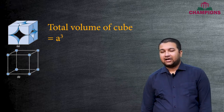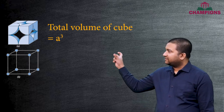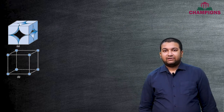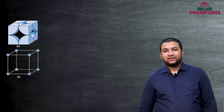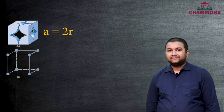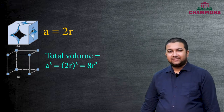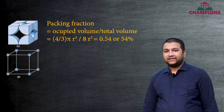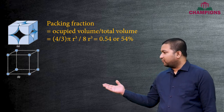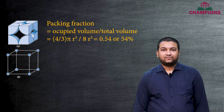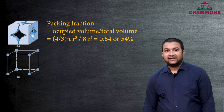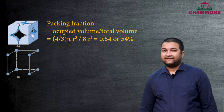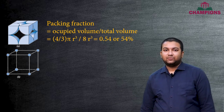The relation between a and r: two radii combine to form one side of the cube, so a = 2r. Therefore a³ = (2r)³. Taking the ratio of occupied volume to total volume gives approximately 54%. This means 54% of the cube is occupied and about 46% is empty space — that is the packing fraction for the simple cubic unit cell.